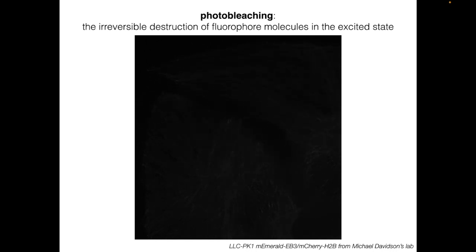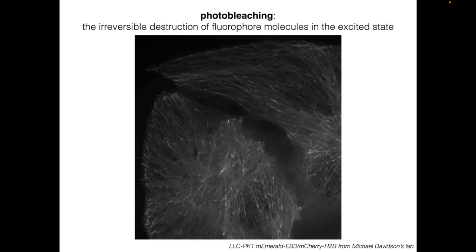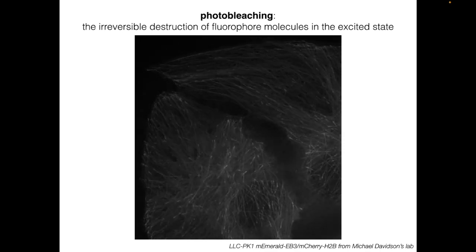There are two key things to know about photobleaching that will help you design your experiment and choose appropriate fluorophores. First, photobleaching requires excitation. If you are not exciting your fluorophores, they won't photobleach. On the other hand, any time you excite your fluorophores, photobleaching will happen. For example, if you're staring at your gorgeous samples through the eyepieces with the fluorescence illumination on, you are exciting fluorophores, and some of them are photobleaching.